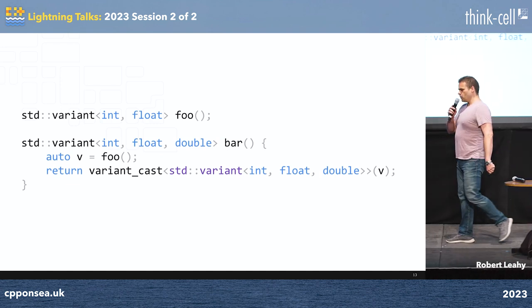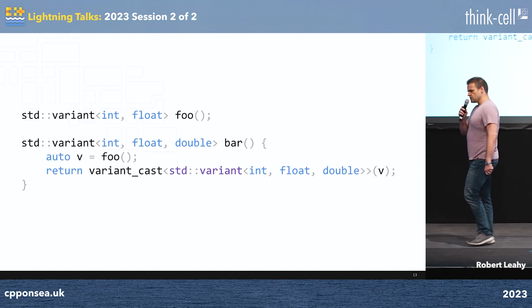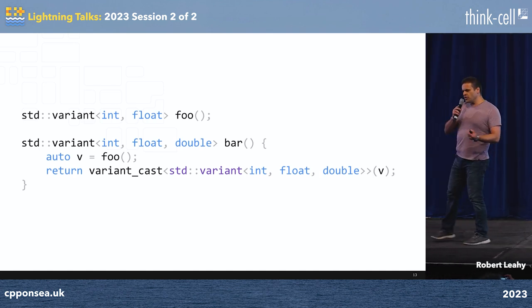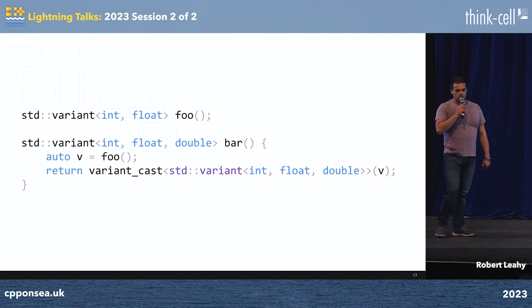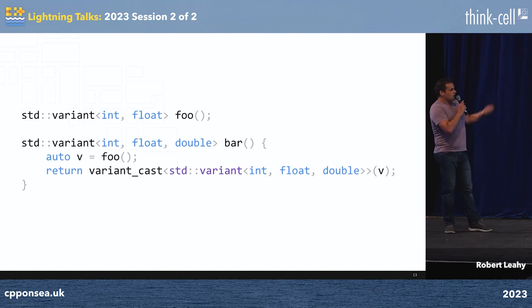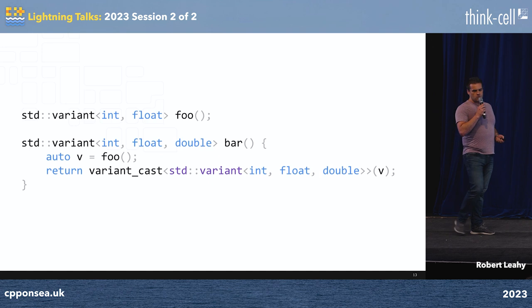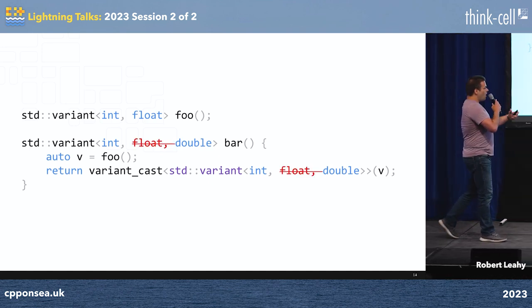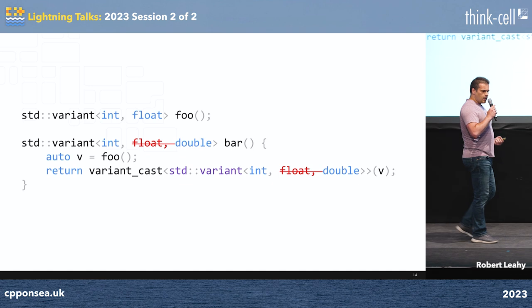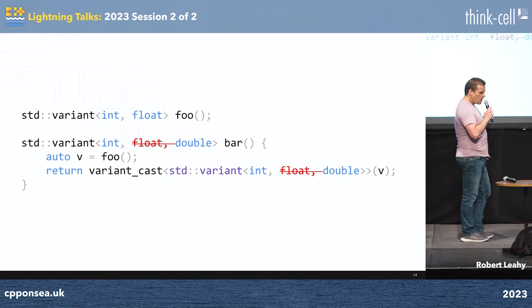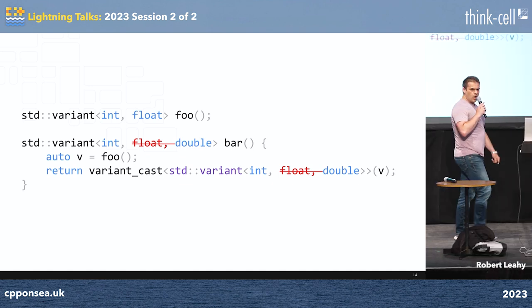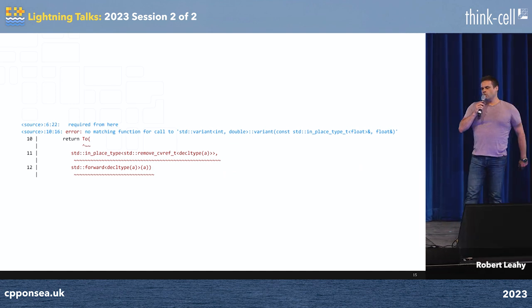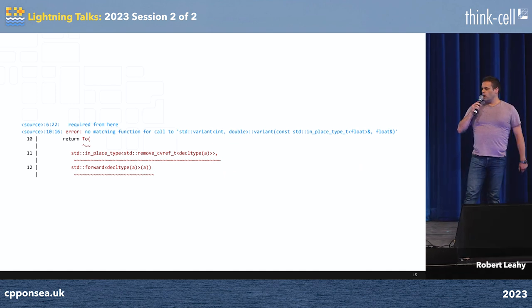But we're C++ programmers. We know things the compiler doesn't. We know things the type system doesn't. So what if we happen to just know that despite the interface, foo only ever returns ints? What happens if we want to reflect that in our interface? Well, we have a problem, because the compiler doesn't really like that, because we made a grave error when writing our cast: it is altogether too safe.